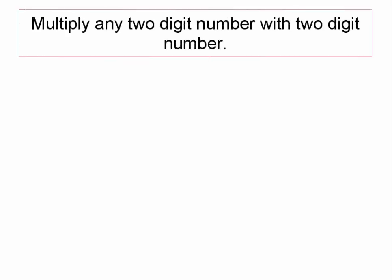We'll multiply any two-digit number with any two-digit number. Let us take example number one. In this example, we are going to multiply 32 with 21 just to make you comfortable with this method.